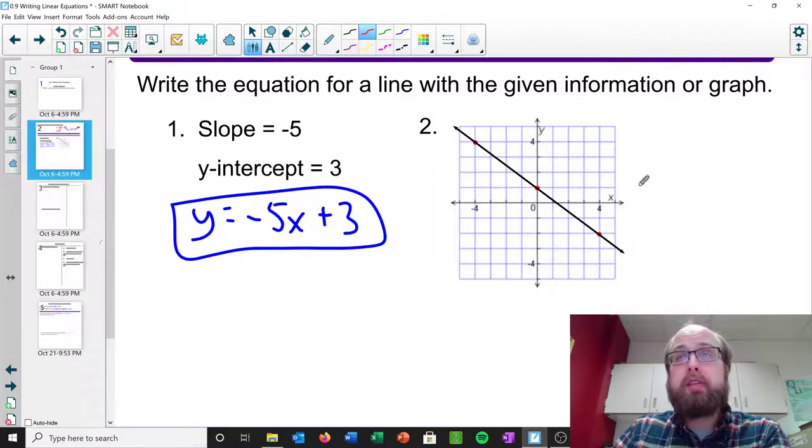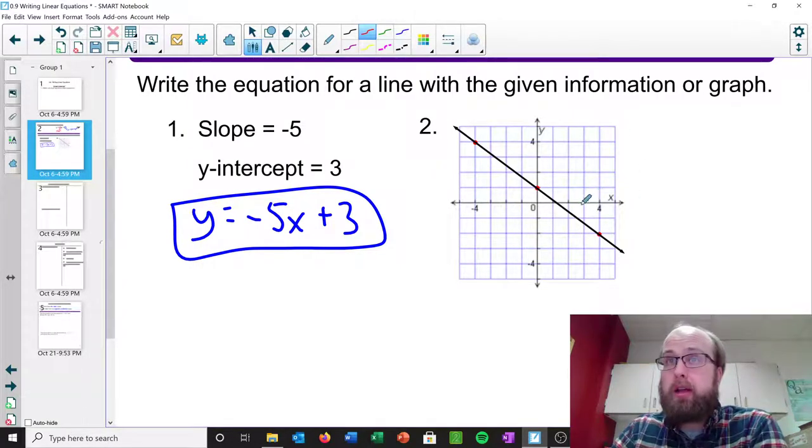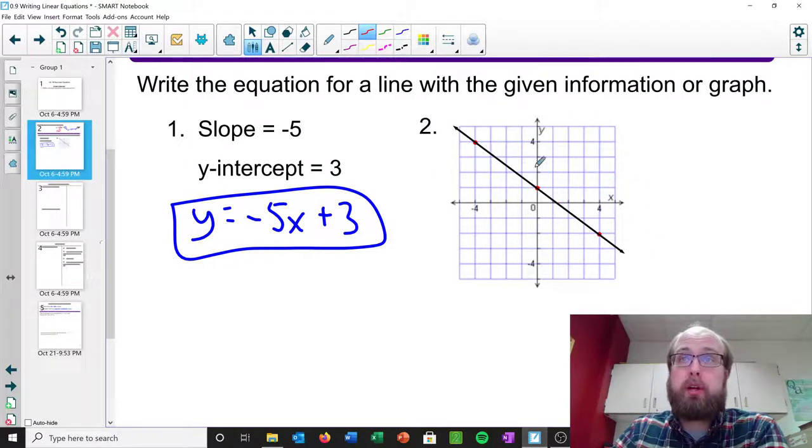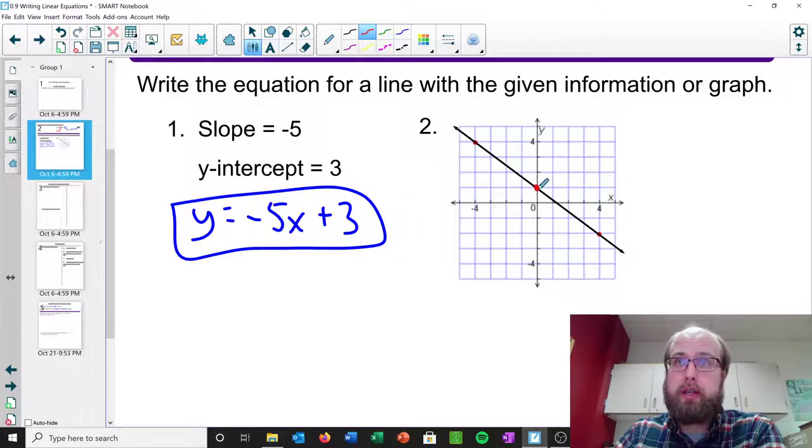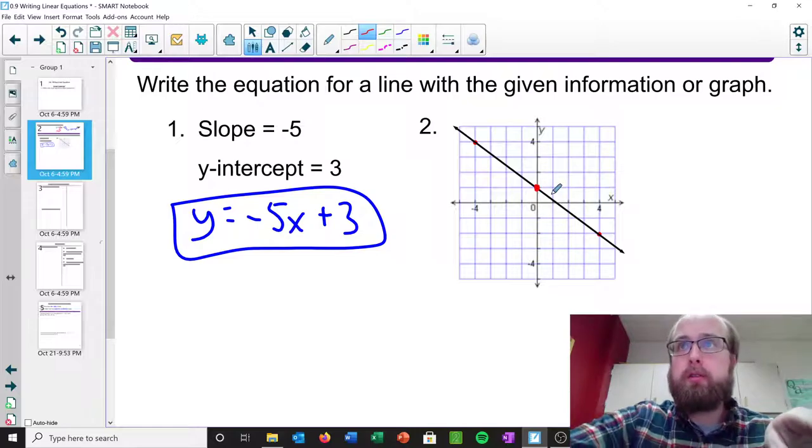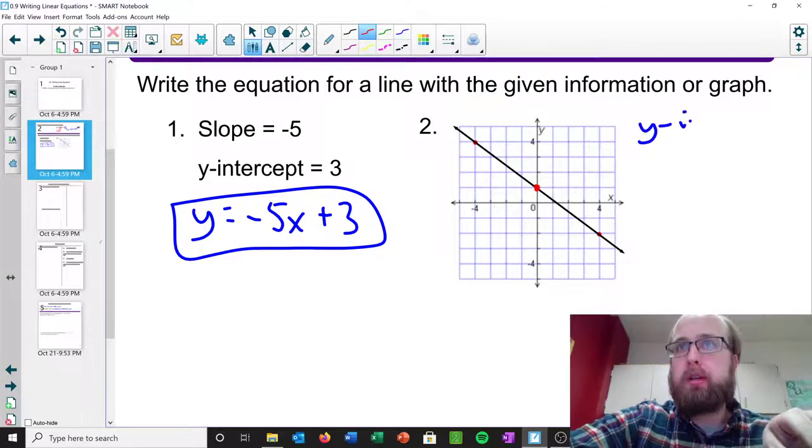You might also be given a graph, and I want you to write the equation for that line. Well, that's really easy because we can just get the slope and y-intercept from the graph. Remember, y-intercept is where it crosses the y-axis. So that would be right here. And so we have a y-intercept of 1 in this case.